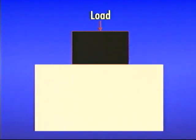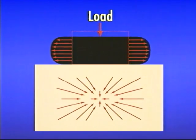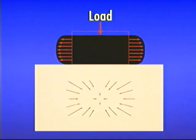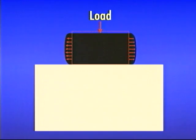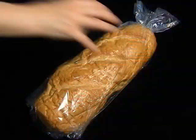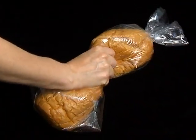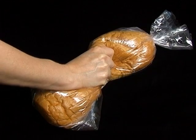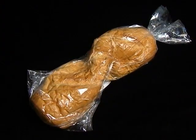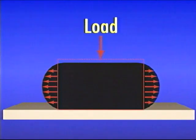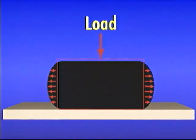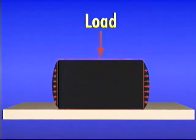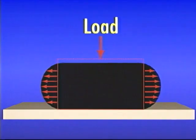Rubber, by its nature, when compressed or under load, changes shape but does not change in overall volume. This property of rubber is unlike some other solid materials. For example, if you compress a loaf of bread, its volume or size decreases. Keeping in mind, when under load, rubber will not decrease in size or volume. The existing volume of rubber will only assume a different shape.